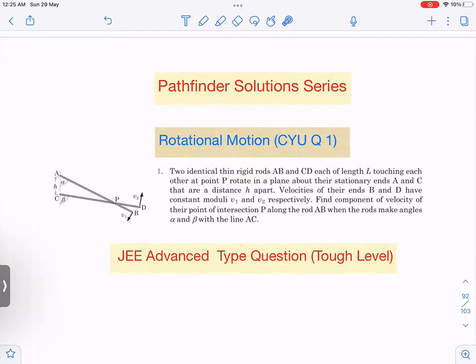There are two identical thin rigid rods, you can see these two rods AB and CD. Rod length is L and they are attaching each other at point P. They rotate in a plane about the stationary ends A and C. These two ends are stationary, they are rotating about these two points, and the distance between them is h, so AC distance is h.